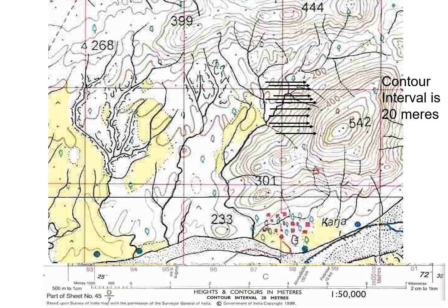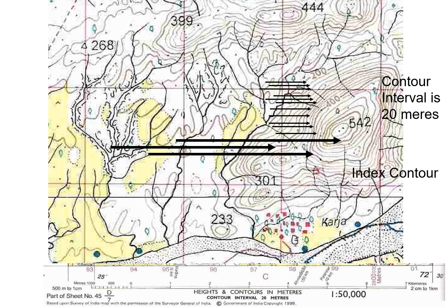Contour interval means the distance between two successive contour lines. It is possible that there may be a relief feature so high that we cannot draw contours clearly at intervals of 20 meters — they would be very close to each other. That is why topographic maps also contain index contours, drawn at an interval of 100 meters. Index contours at 300, 400, and 500 meters are shown as dark brown lines, and they help us in identifying the height of the relief feature.